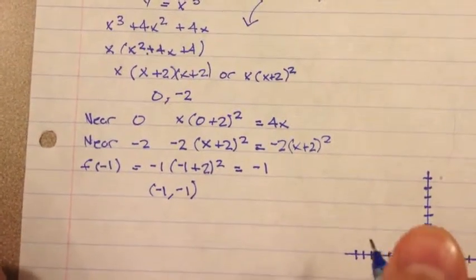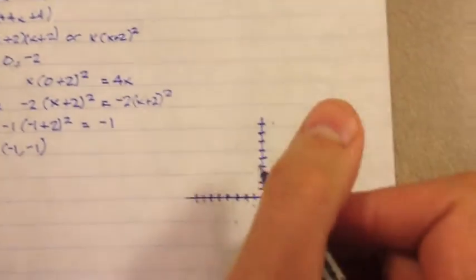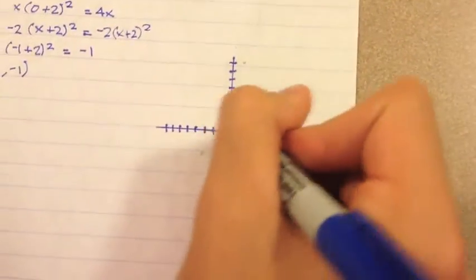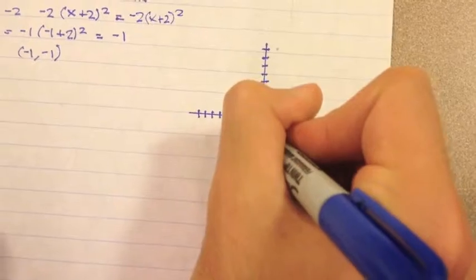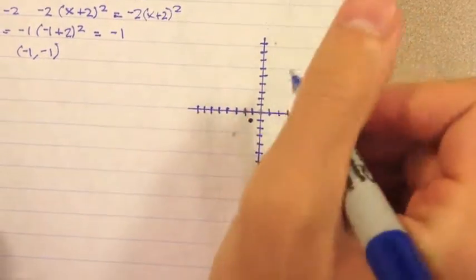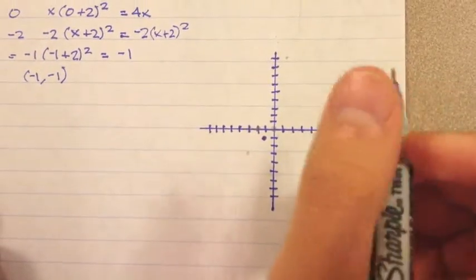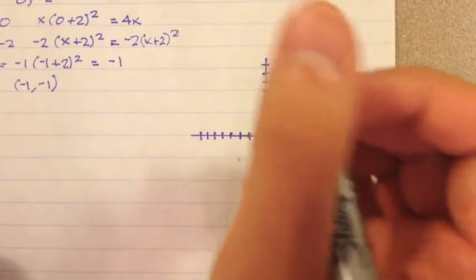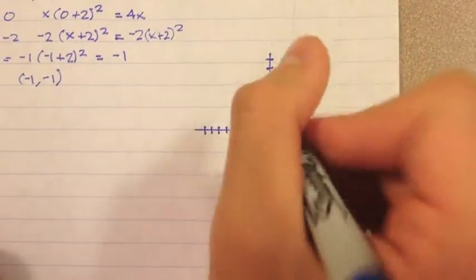And now, all we have to do is just graph it. So, we're going to put the point negative 1, negative 1 there. And then, we're going to plug in our zeros, which is 0 and negative 2.